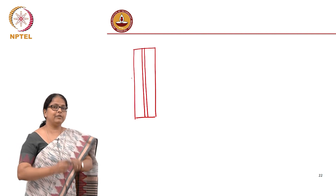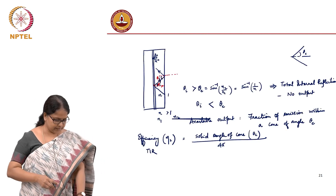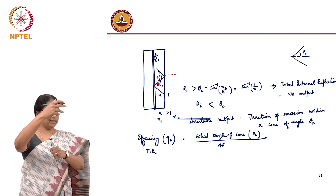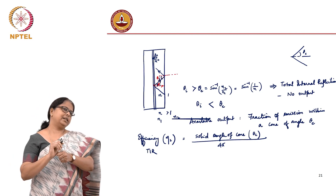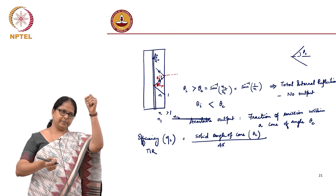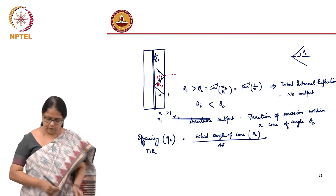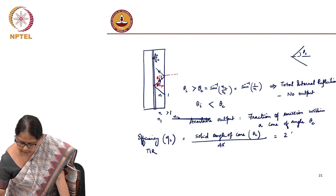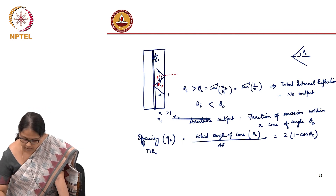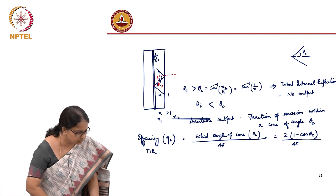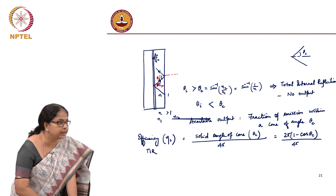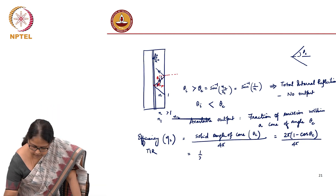How do I find the solid angle of a cone? You integrate in spherical coordinates: integrate 2π sin(θ) dθ from 0 to theta_c. That comes out to be 2π(1 − cos θ_c). This is the solid angle of a cone from basic geometry. Dividing by 4π, and correcting the factor, this number is actually ½(1 − cos θ_c).